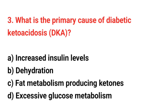Question number 3: What is the primary cause of diabetic ketoacidosis? The right answer is option C: Fat metabolism producing ketones.